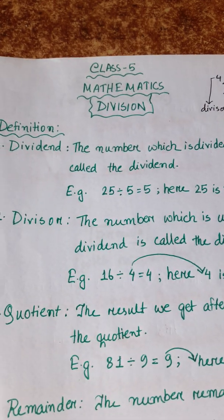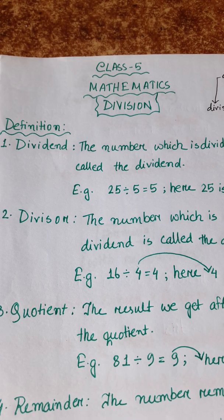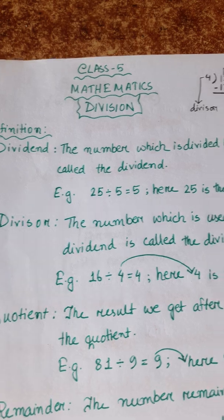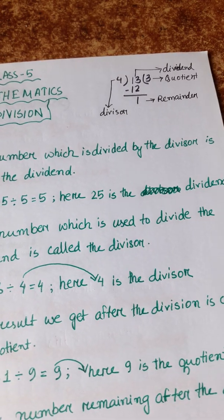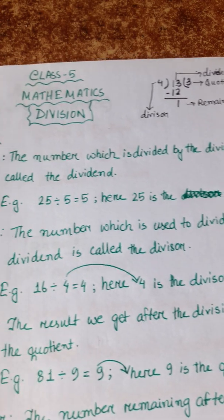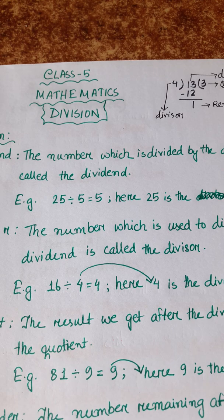Number 1: Dividend. The number which is divided by the divisor is called the Dividend. This number is divided by the divisor.